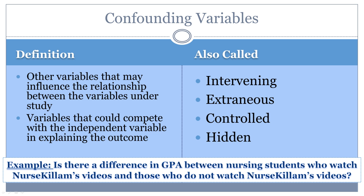Researchers also need to be careful not to claim cause and effect relationships too easily in experimental research because of these confounding variables. In experimental research, an attempt is made to control as many confounding variables as possible. In our example question, what things other than watching Nurse Killam's videos may cause an increased GPA? Anything other than the independent variable that could have caused the student's GPA to increase would be a confounding variable.